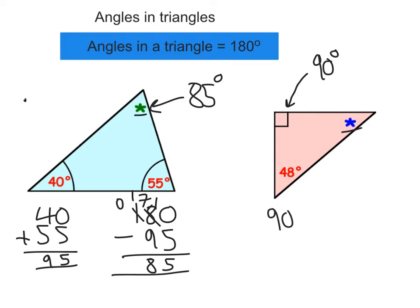So I'm going to add my two angles I know about together first, as I did before. So that's going to be 8 and that's going to be 138. And then to find the blue star, I'm going to take 138 away from 180.